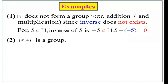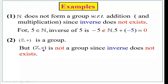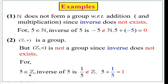Z comma plus — the set of integers with respect to addition — is a group. But Z with respect to multiplication is not a group since inverse does not exist: for 5 in Z, the inverse is 1 by 5, which is not in the set of integers. With respect to addition, Z forms a group; with respect to multiplication, it is not a group. For N, identity does not exist and inverse does not exist; for Z under multiplication, identity exists (1) but inverse does not.